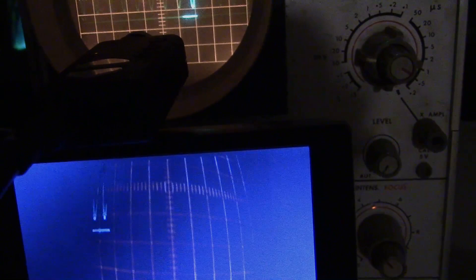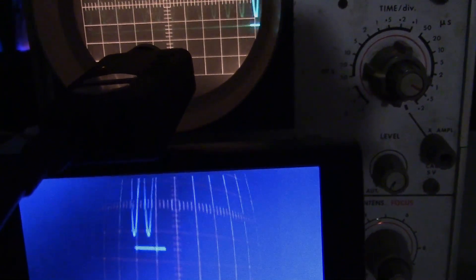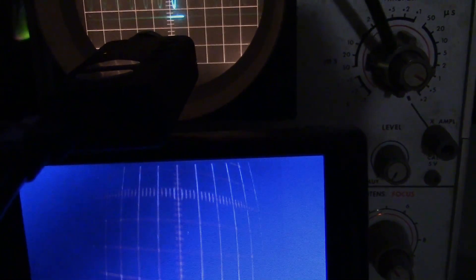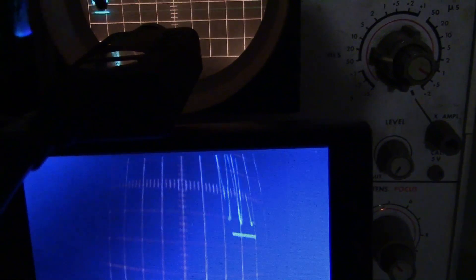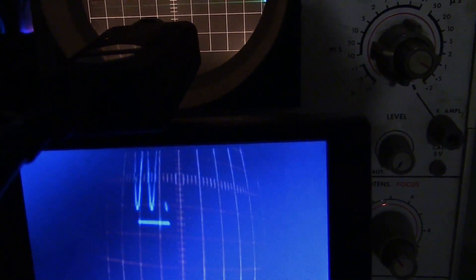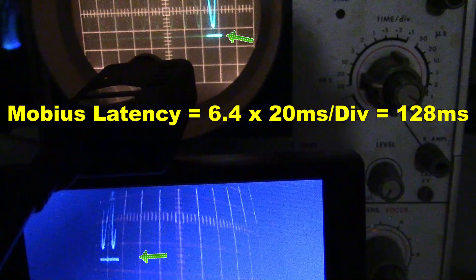This is the Mobius camera, and it has quite a bit of delay, so I had to change the time division to 20 milliseconds per division. At 20 milliseconds per division, the Mobius yields about 6.4 grid squares between the scope and the monitor, and multiplying that gives us 128 milliseconds.